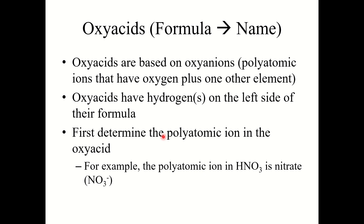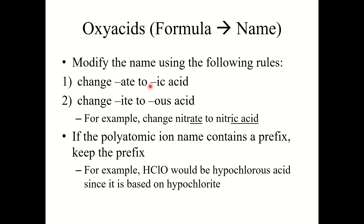Now let's go to oxy acids. Oxy acids are based on oxyanions — polyatomic anions that have oxygen plus one other element. Oxy acids, just like binary acids, have hydrogens on the left side of their formula, but the anion is a polyatomic oxyanion, not just one type of element. To go from formula to name, first determine the polyatomic ion in the oxy acid. Then modify the name: change anything ending in -ate to -ic, anything ending in -ite to -ous, and add the word acid.